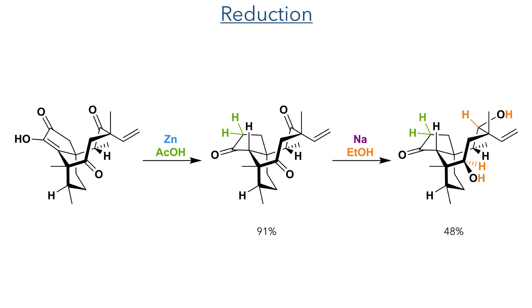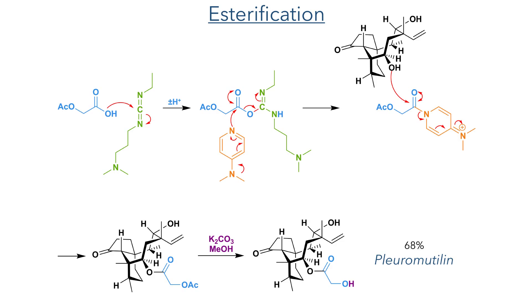This compound was then further reduced using sodium and ethanol, which selectively reduced the two ketones present in the cyclooctane ring. However, the reaction was low-yielding and mostly starting material was recovered. This process was therefore repeated three times, after which the researchers recovered three milligrams of their target compound — enough material to complete the final step: an esterification using EDC. EDC is first protonated by the acid, which then attacks as a nucleophile forming an activated ester, attacked by DMAP to eliminate a urea byproduct and form an even more activated species. A hydroxyl group on the substrate then attacks to form the ester, and the terminal acetate was hydrolysed using potassium carbonate and methanol to complete the synthesis of pleuromutalin in a 68% yield.